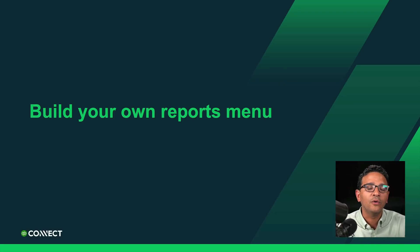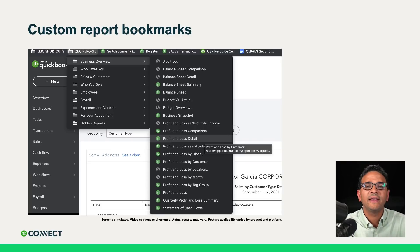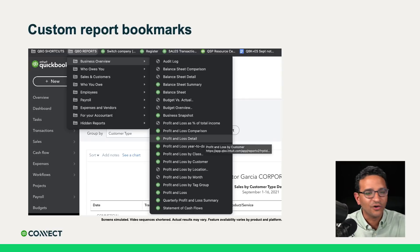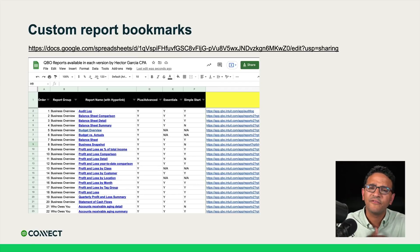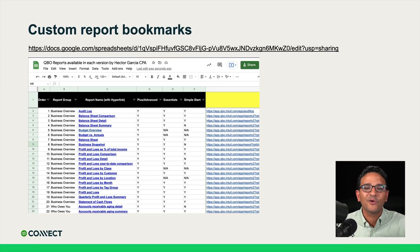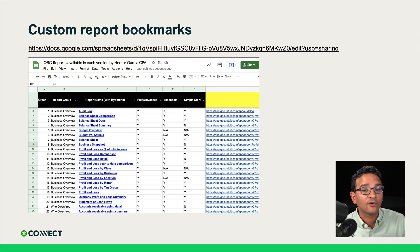Let's start with building your own reports menu. The premise here is you will be using Google Chrome as your browser for QuickBooks Online. Internet Explorer, Microsoft Edge, or Safari only work less well for what we're going to show you. So you're going to add bookmarks and create folders to organize those bookmarks.